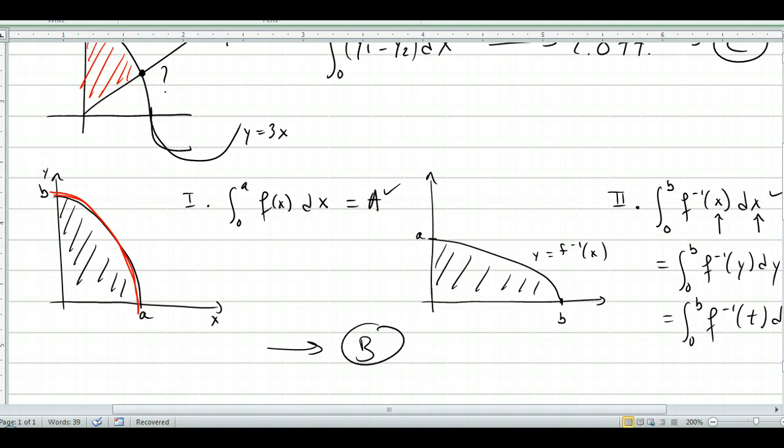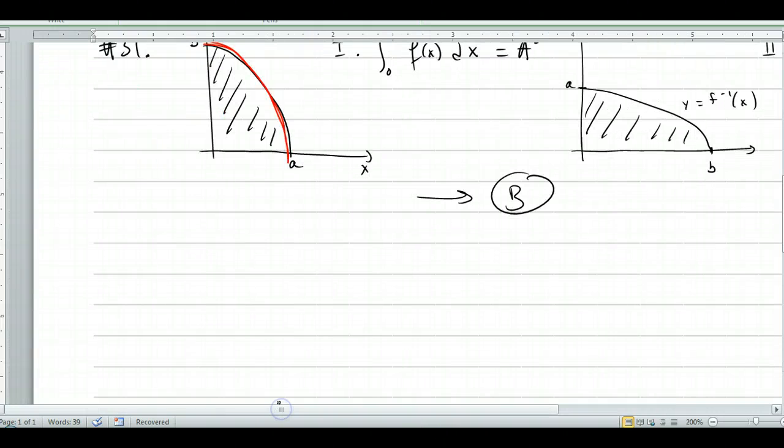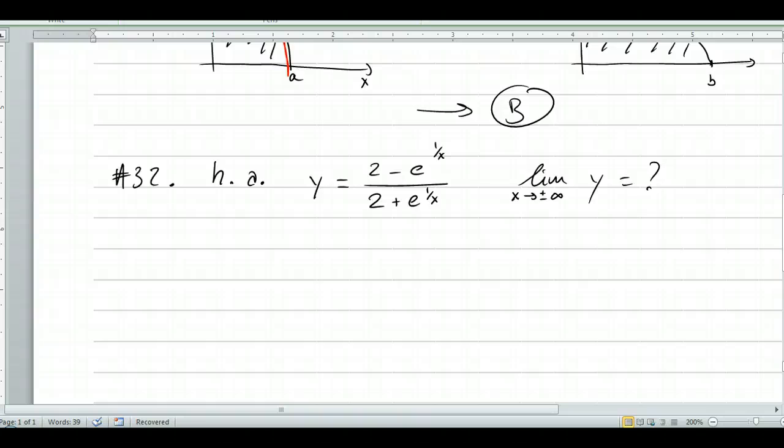All right, let's move on. And 32, horizontal asymptotes. Now this is precalc problems. 2 minus e to the 1 over x over 2 plus e to the 1 over x. So horizontal asymptote, basically you're wondering this. This is really not difficult. Don't be afraid of it.